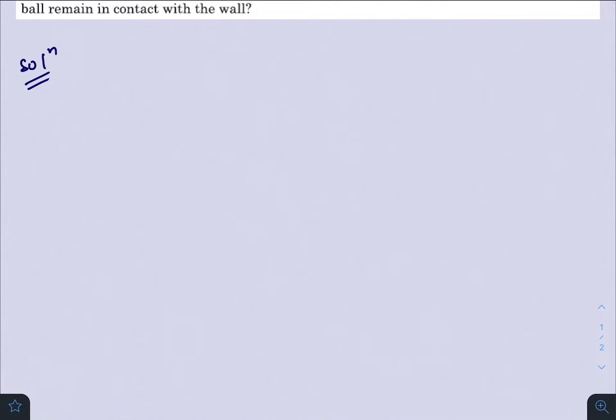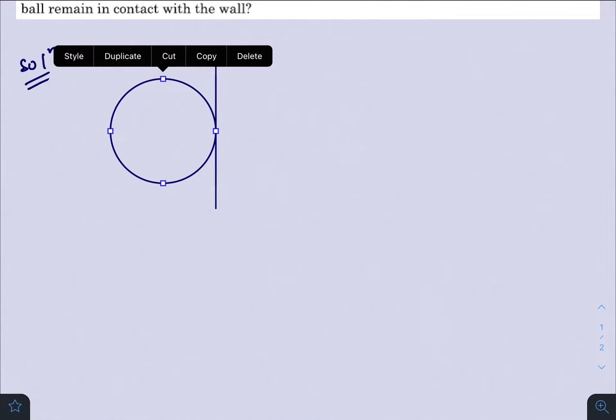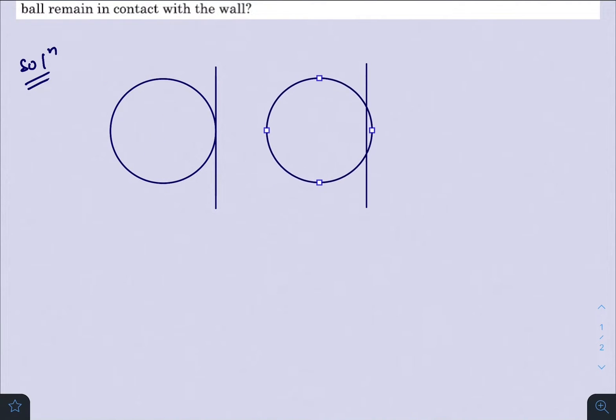Diagram of the ball for three situations. Let this be the wall. First when the ball just strikes the wall. Second when the ball gets totally compressed by the wall.